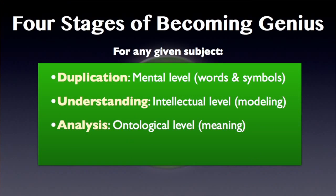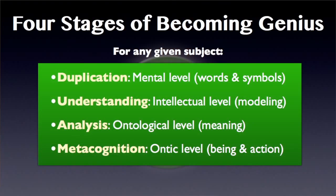Analysis is the ontological level. What is the meaning of these relationships? What is cause? What is effect? What is a major quality and a minor quality? What are the different relationships between and among the various parts of my model? And finally, what does it all mean? When you finally understand what it means, metacognition occurs. This is the ontic level — the level of being and action. Up until now we've been learning. But when you reach metacognition, you have reached mastery. You have become the thing you're studying. It has been absorbed into your being. Now there's no more need to think about it — you can just be it. This is mastery. This is being genius.